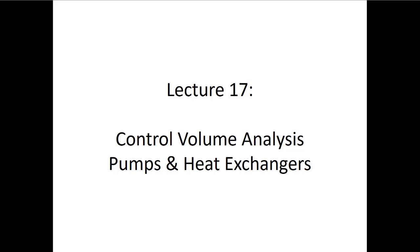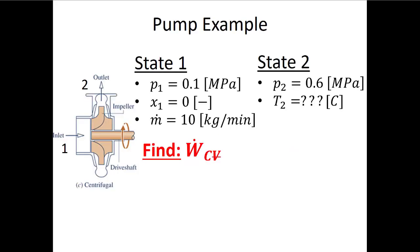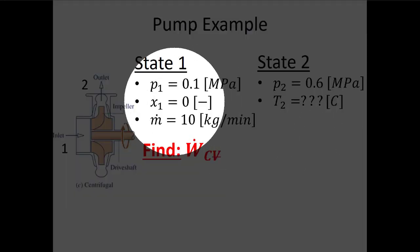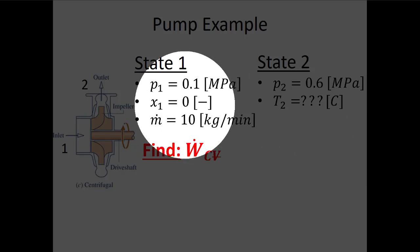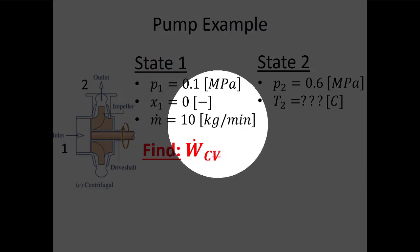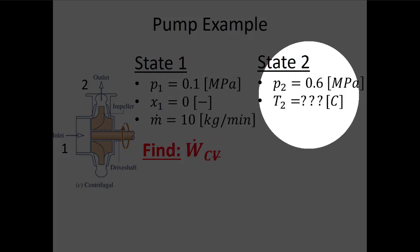Each component has a little bit of a trick to it — especially pumps, which have a special approach different from other processes. Here we have a pump: pumps deal with liquids and increase their pressure. We start at state 1 with a pressure of 0.1 MPa, quality of zero (so this is liquid water), and a mass flow rate of 10 kg/min. The pump increases the pressure to 0.6 MPa, and we don't know the temperature at state 2. We're asked to find the power this pump consumes.